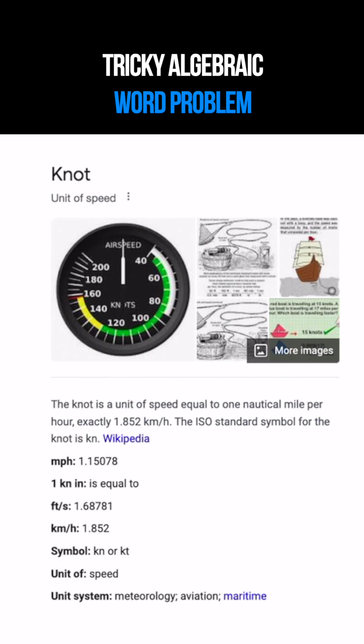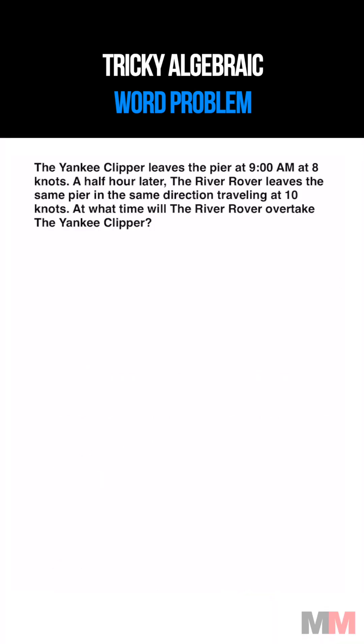First of all, we have to know what a knot means, and it is just a unit of speed. They are comparing distances between the two boats, and we want to see when the distance of the River Rover is going to be greater than the Yankee Clipper.